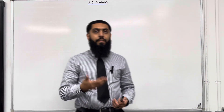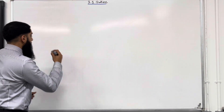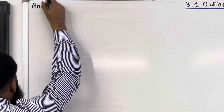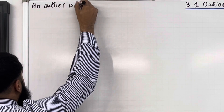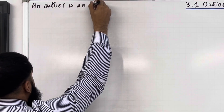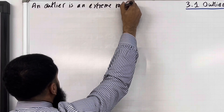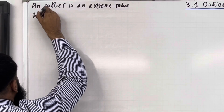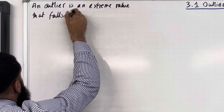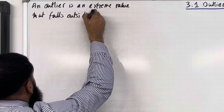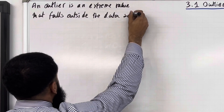What is the definition of an outlier? An outlier is an extreme value that falls outside the data set.